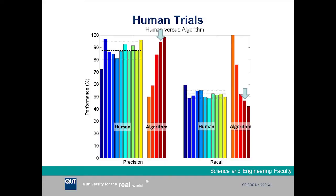We ran the algorithm against humans in a set of human trials. Human performance was fairly consistent across all the different participants. The algorithm was run with different parameters specifying how aggressive it was in making matches, and the algorithm was able to perform at a similar precision and recall level simultaneously as the human participants.